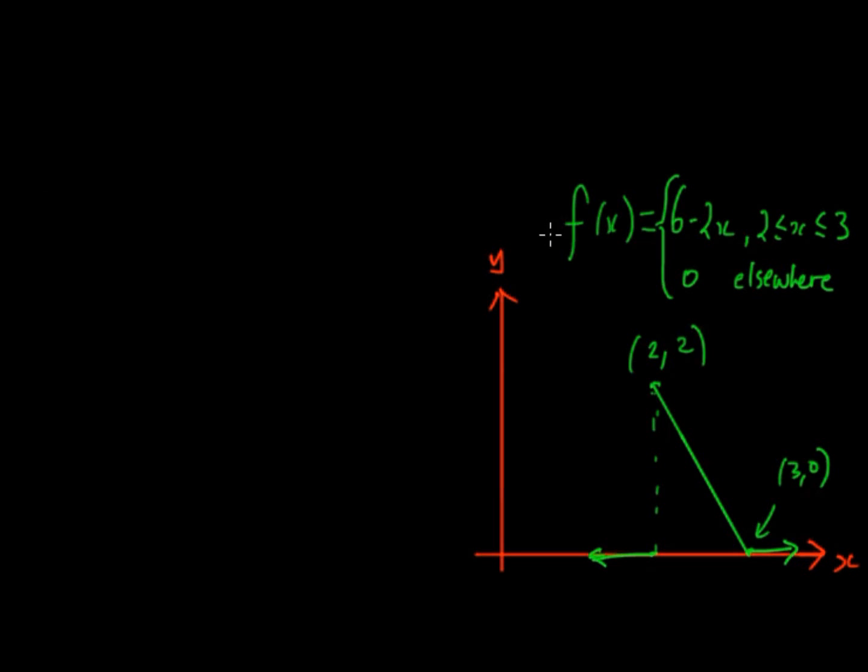In this example we have a piecewise function where f(x) is equal to 6 minus 2x between 2 and 3 and it's 0 elsewhere. So it's a probability density function.